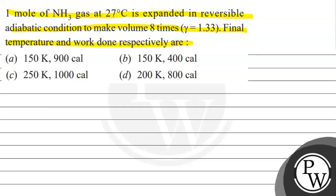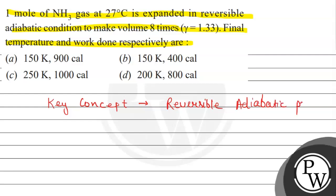Let's see the key concept of this question. The key concept is the reversible adiabatic process. In this process, heat transfer Q will be 0. The question states that ammonia gas has expanded in reversible adiabatic conditions, so the process is reversible and heat transfer is zero.